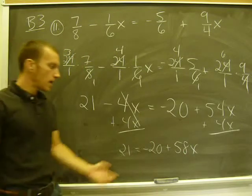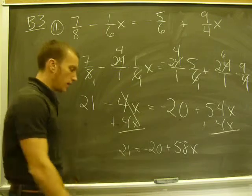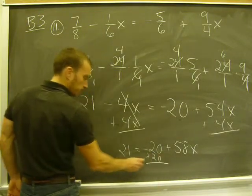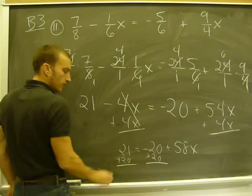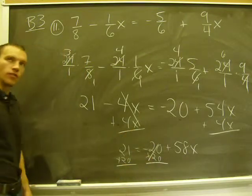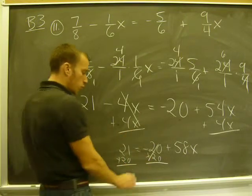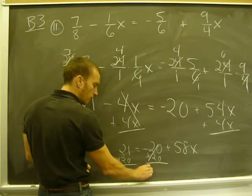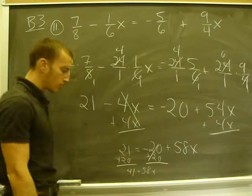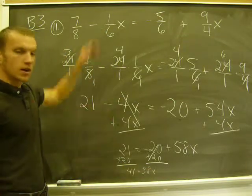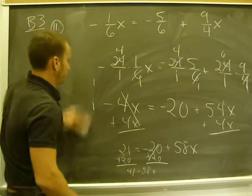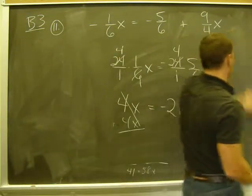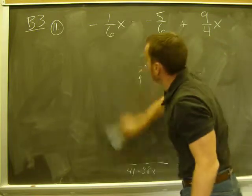And now I can get my number term over here. And I do that by adding 20 to both sides. And that's going to get rid of it on the right side. Now 21 plus 20 is 41. I'm going to put 41 equals 58x. Now that's a little hard to see. So I'm going to rewrite it up here.